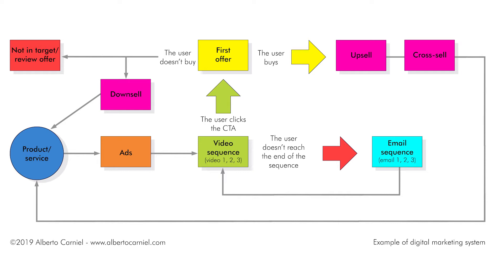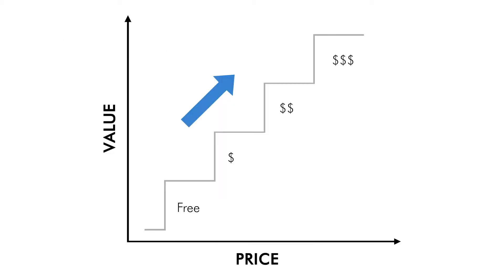If the user doesn't accept the first offer, it's useless trying to upsell or cross-sell. It is more appropriate to activate a downsell strategy — trying to sell a downgraded and cheaper version of the product or service, for example a smaller size of french fries. If the user rejects the downsell, it means they are not in target or the offering must be reviewed to be more appealing. Downsell, upsell, and cross-sell are only possible if the business has a value ladder — a fundamental marketing concept that represents the key to increasing profits and expanding the customer base. The main point of a value ladder is having multiple offerings, starting from a free product or service and then increasing the price.